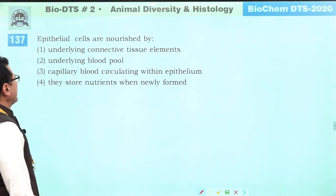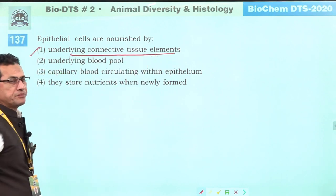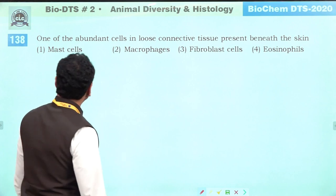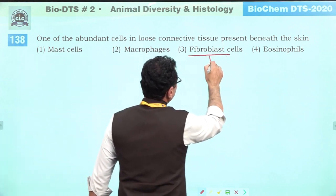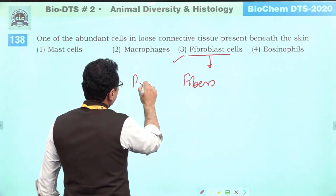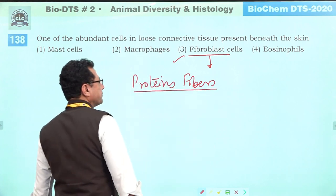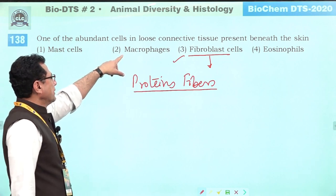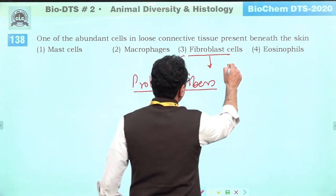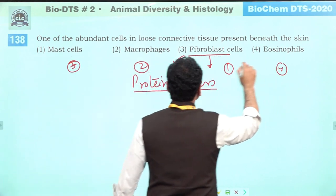Epithelial cells are nourished by the underlying connective tissue elements. Answer is one. The most abundant cells in loose connective tissue are fibroblast cells, which produce protein fibers — collagen, elastin, etc. Answer is three. Reticular protein filament is a branched protein fiber found in areolar tissue. Answer is two.